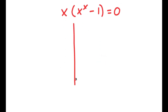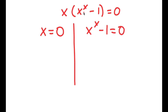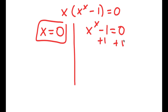This gives me two equations: x equals 0, and x to the power of x minus 1 equals 0. So x equals 0 is already a solution. For x to the power of x minus 1 equals 0, I add 1 on both sides, and I get x to the power of x equals 1.